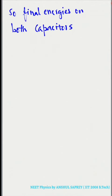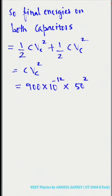So, final energies on both capacitors is equal to half C VC square plus half C VC square that is equal to C into VC square, 900 into 10 raised to minus 12 into 50 square.